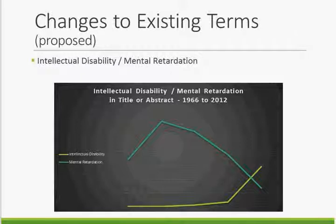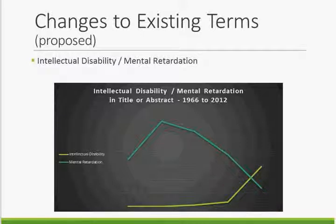This chart shows the number of ERIC records containing mental retardation or intellectual disability in the title or abstract from 1966 to 2002. As you can see, there was a clear transition from mental retardation as the preferred term to intellectual disability as the preferred term. Now that we've covered the nuts and bolts of the Thesaurus, Judy Beck will talk about how the Thesaurus is used to enable resource discovery in ERIC.